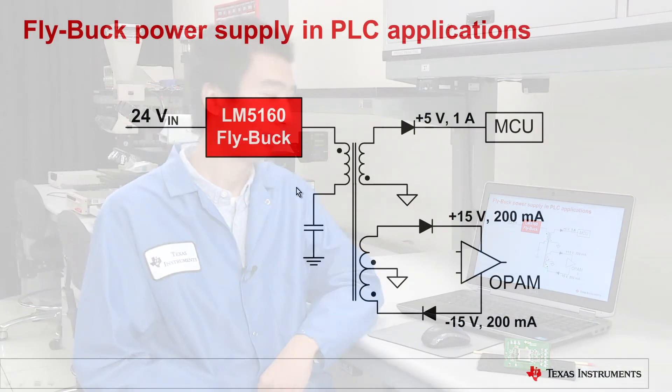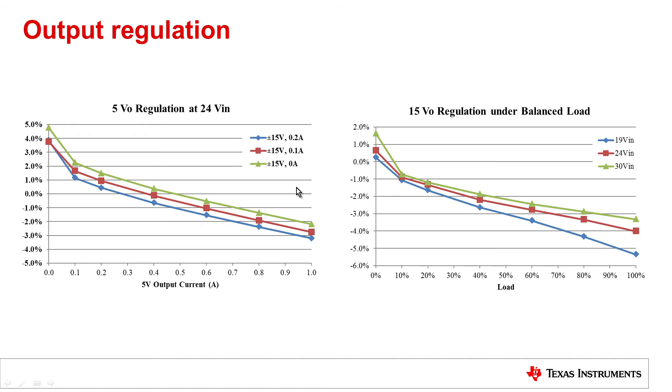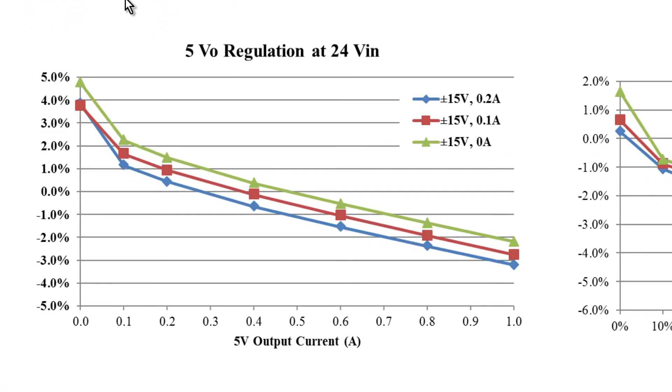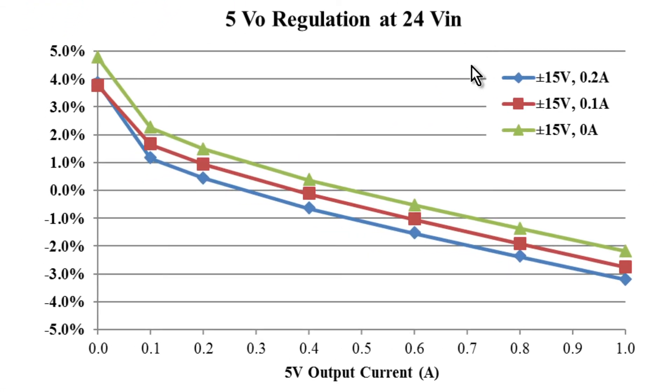So let's look at the performance data. For the output regulation, the 5V output is tested at 24V input and by varying the load from 0 to 1A full load and at different plus minus 15V load levels. As you can see, the overall regulation is still within the 5% target.